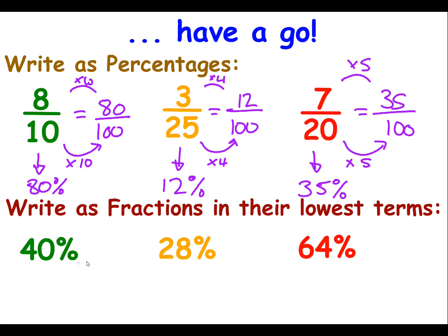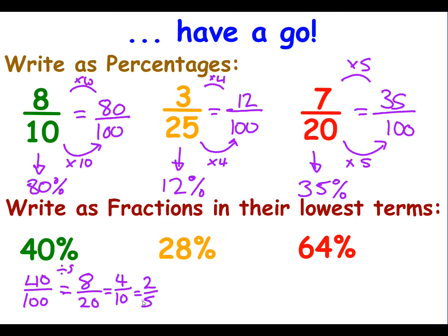Now let's go the other way and turn percentages into fractions. We have 40%, which means 40 over 100. I can simplify: 5 goes into both because they both end in 0 — 5 goes into 40 eight times, giving 8 over 20. Divide again by 2 and it becomes 4 over 10. Divide by 2 again and it becomes 2 over 5. So 40%, whichever way you simplify, gives you 2 fifths.